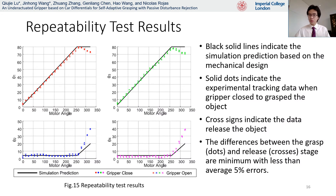Here is the result of the repeatability experiment. Black solid lines indicate the simulation prediction, solid dots indicate the tracked data during grasping, and cross signs indicate the tracking data when releasing the sphere. Although deviated a little from the simulation due to the fact that the center of the sphere was slightly off, the difference between the closing and releasing points is small, with an average of 5% error.